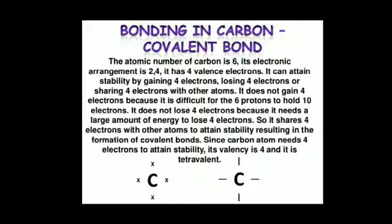If we talk about bonding in carbon, then it is covalent bonding. Covalent bonding means the bonding that is formed by sharing of electrons. As you know, if carbon lies at the 6th position in the modern periodic table, then the atomic number of carbon is 6.